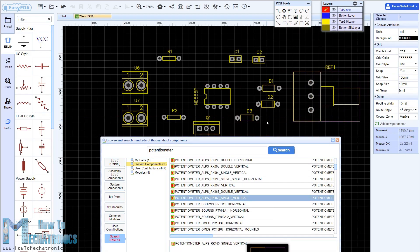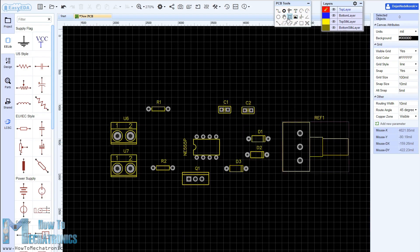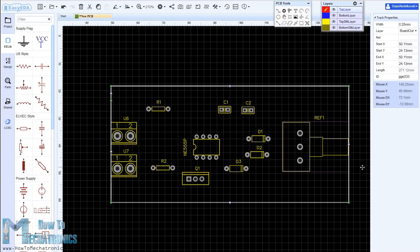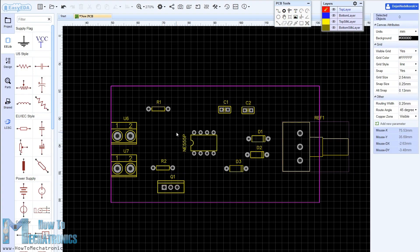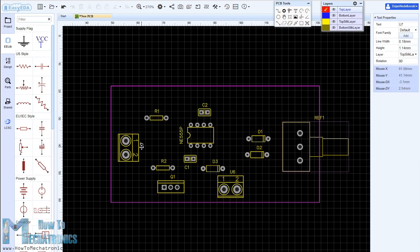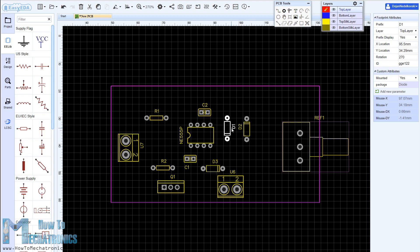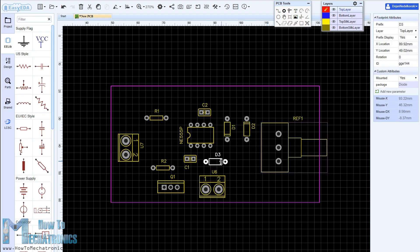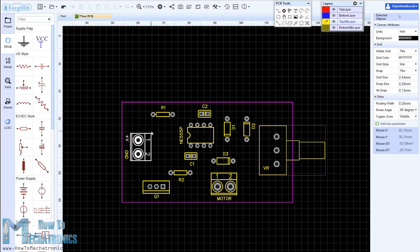After inserting the components we need to create the board outline and start arranging the components. The two capacitors should be placed as near as possible to the 555 timer, while the other components can be placed wherever we want, but still in a logical arrangement according to the circuit schematic.